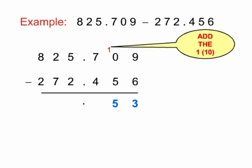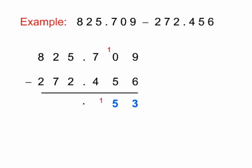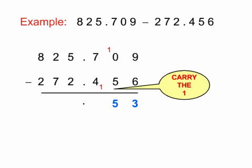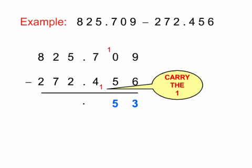Now we carry the 1 to the bottom number. In other words the bottom number is 4 plus 1 which is 5. So the subtraction now is 7 take away 5 which is 2.